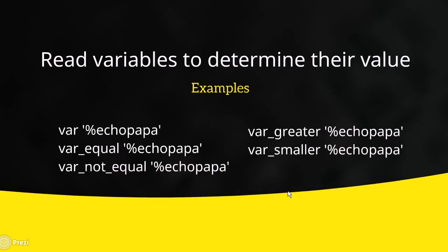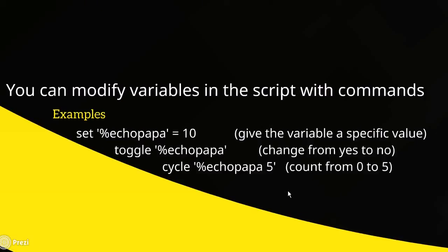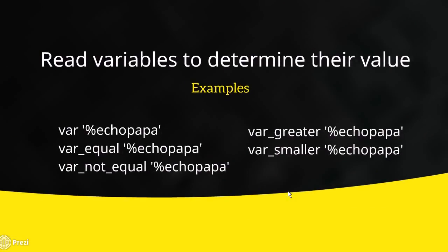You can also read variables to determine their value. The comparison commands include: variable equals, variable not equal to, greater than, and smaller than. For example, if you set EchoPapa to 10, you can then ask in a conditional branch: does EchoPapa equal 10? If yes, do one thing; if no, do something else. The same logic applies with not equal to, greater than, and smaller than — lots of options.